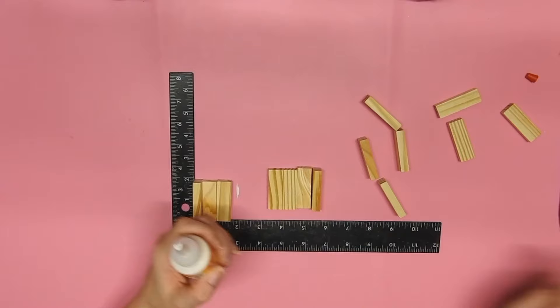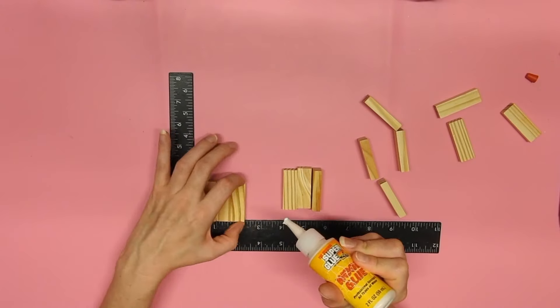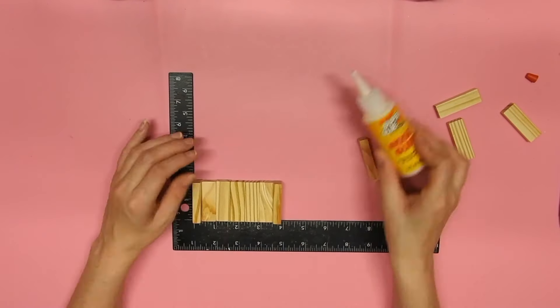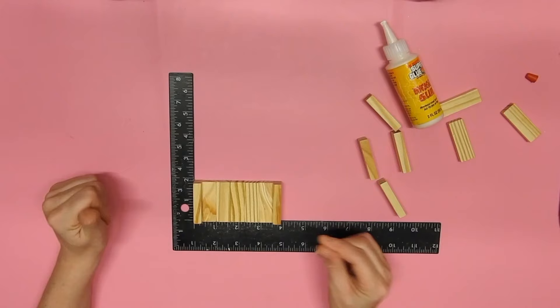I'm gluing the first block standing on its side and then the next five lying flat and then the last one on its side.